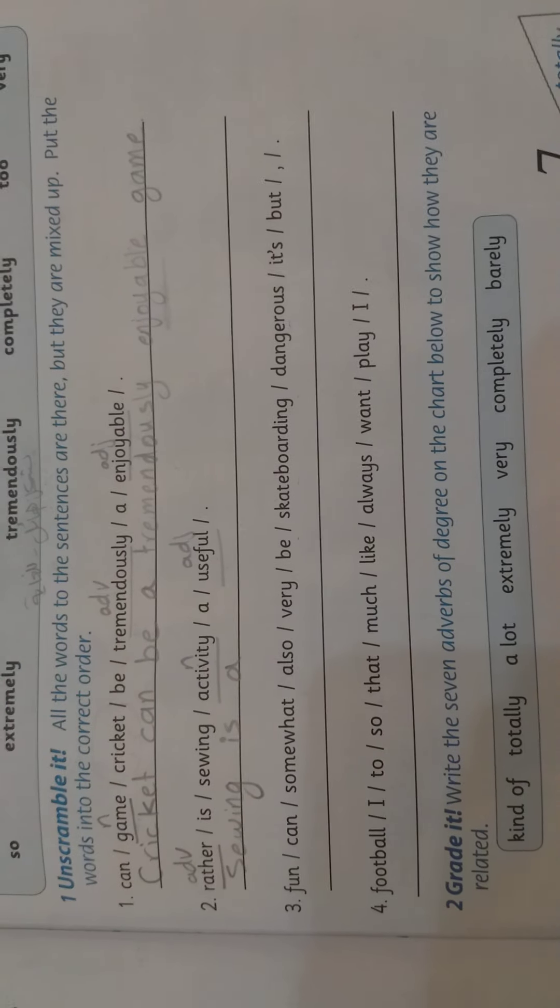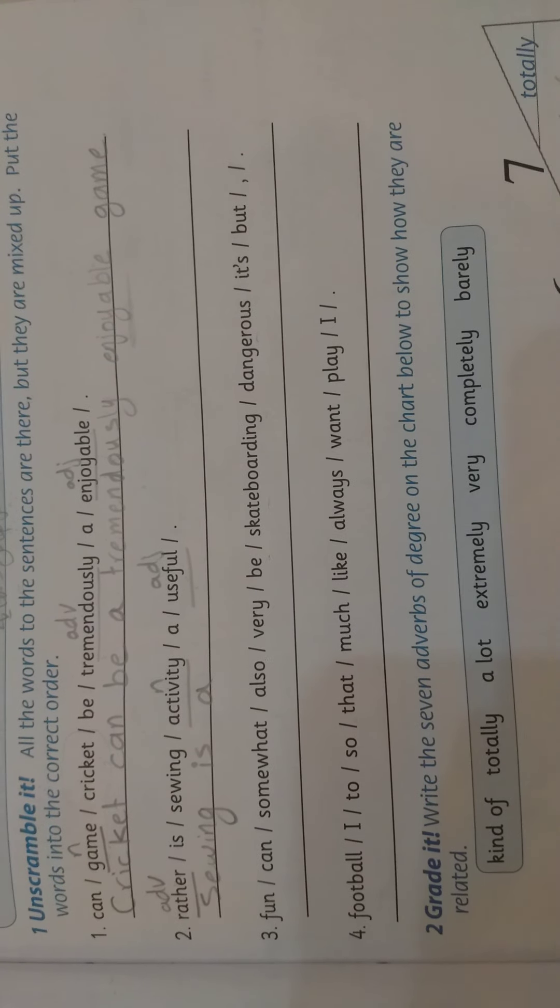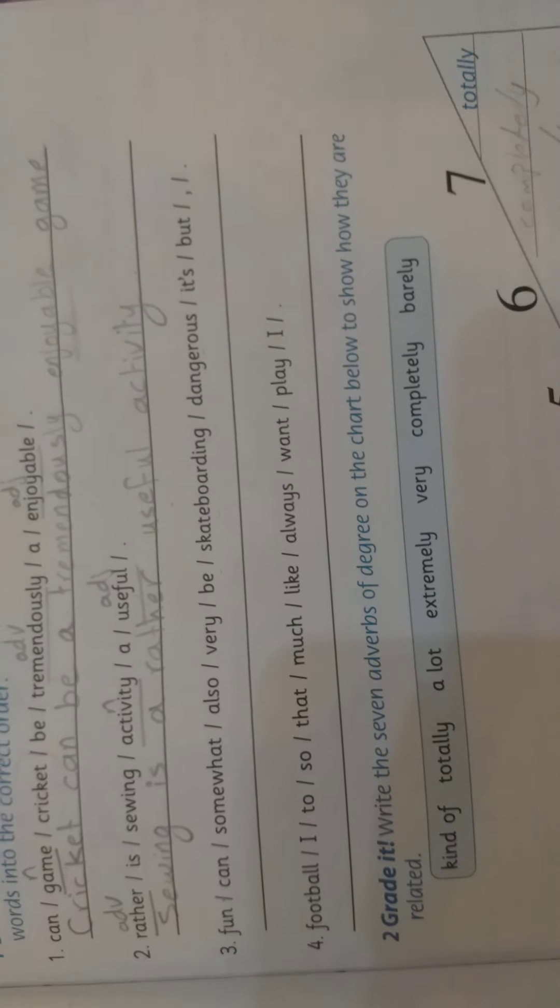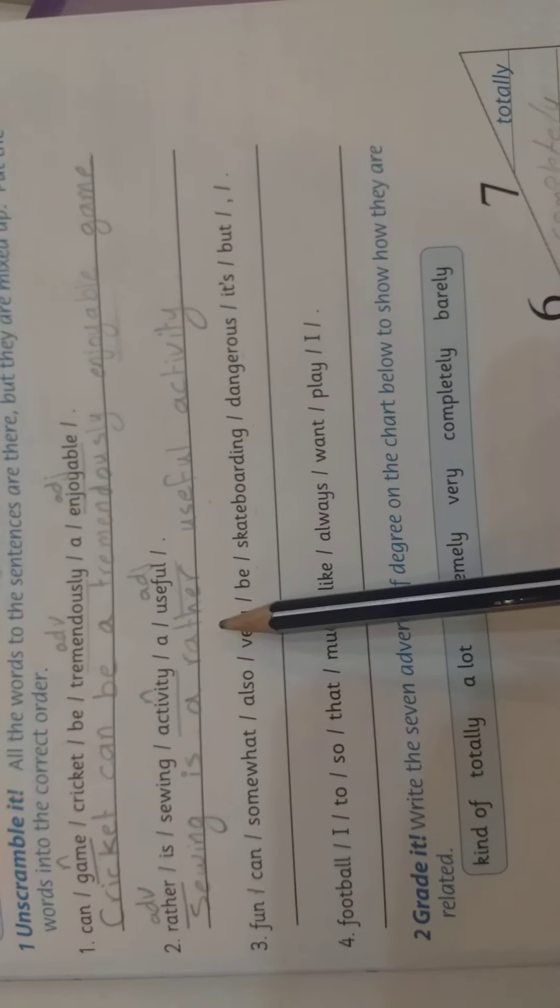Now, I ask myself. Rather comes before adjectives or before verbs? Rather comes before adjectives. So I will write rather, then I will write the adjective. And where is the adjective? The adjective is useful. I will write rather useful. Rather comes before adjectives. Rather useful and now we will write the noun which is activity. Write activity here. And the sentence becomes Sewing is a rather useful activity. الخياطة هو نشاط مفيد إلى أبعد حد.